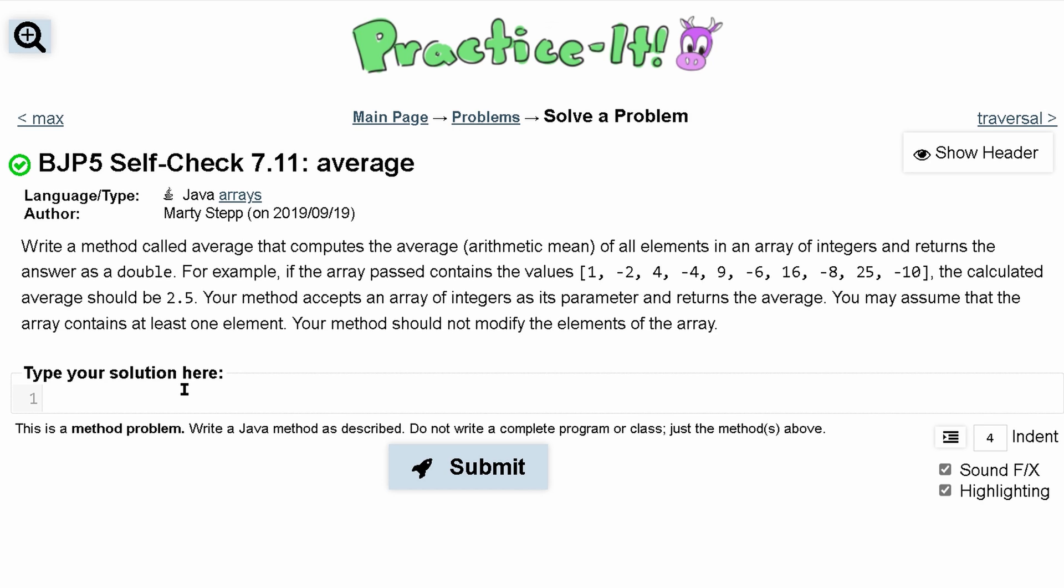The average method computes the arithmetic mean of all elements in an array of integers and returns the answer as a double. We're returning a public double, it's called average, and we're taking an array as input, so ints with brackets, and we'll call this arr.